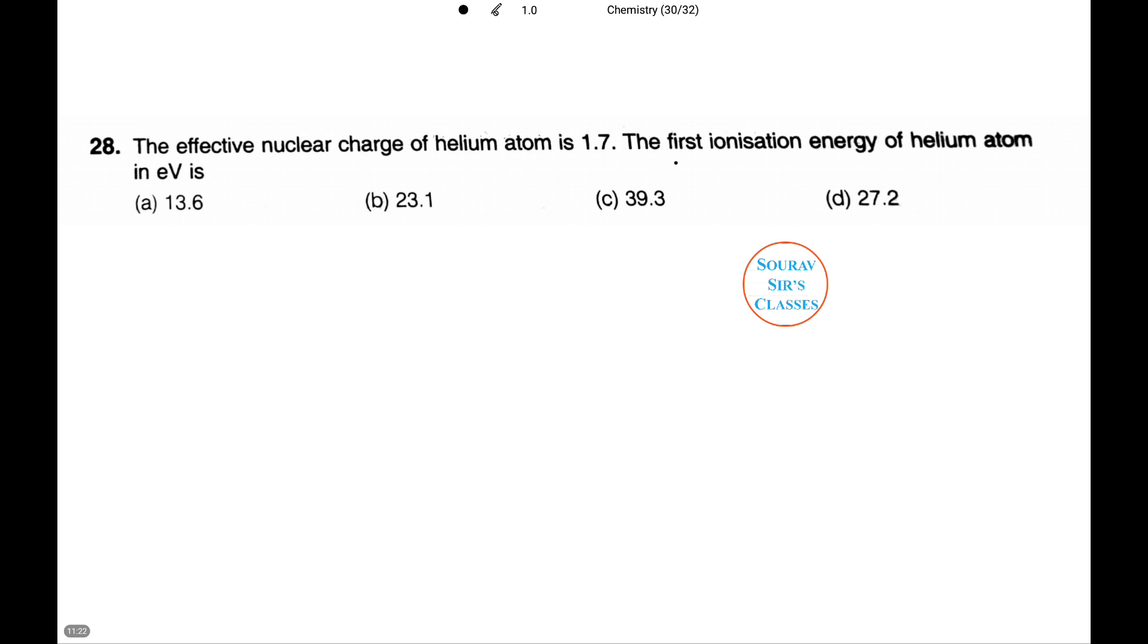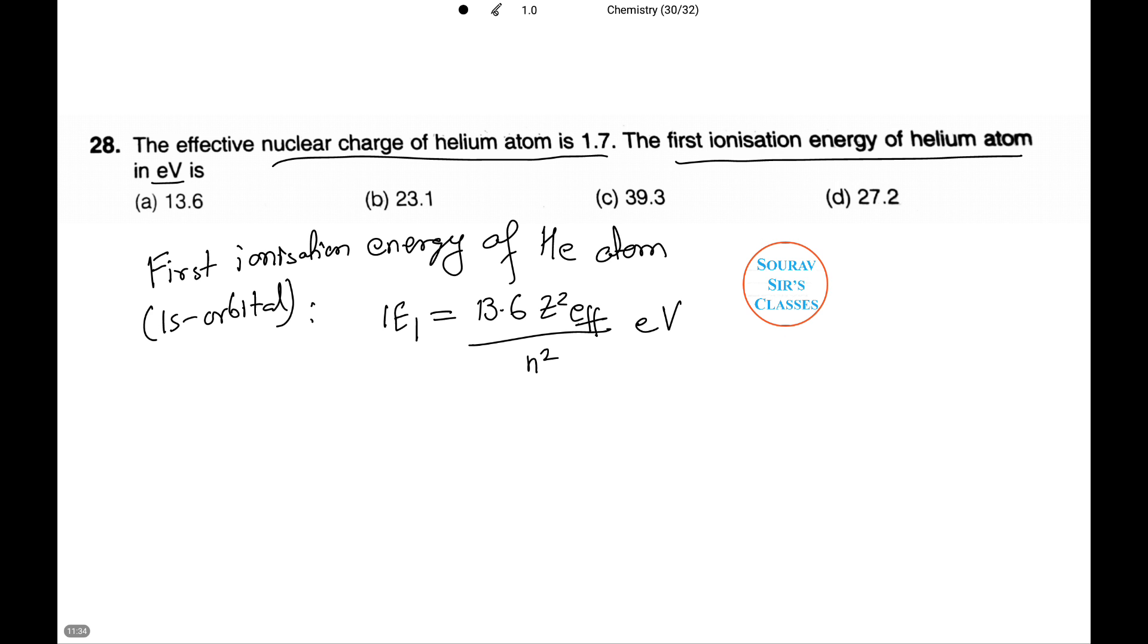Now in the next question we need to calculate the first ionization energy of a helium atom. We are given that the effective nuclear charge of helium atom is 1.7. Notice we need to do it in eV. The first ionization energy of helium atom containing 1s orbital can be given out in the following formula: IE1 equals 13.6 Z-effective squared by n squared in eV. Putting in the values we get 39.304 eV and this coincides with option C.